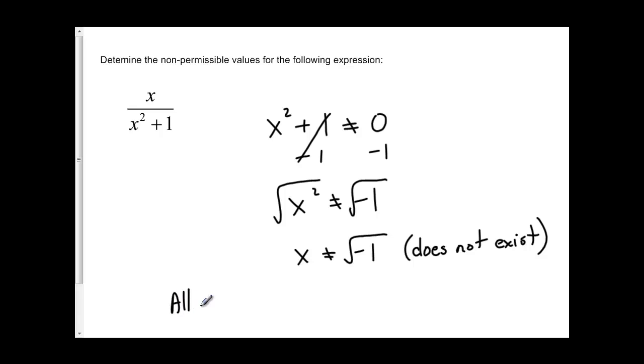Because this number does not exist, all numbers are permissible for x. There is no number that we could substitute in for x that is going to give us a denominator of 0. So there are no non-permissible values. All of the values of x are allowed.